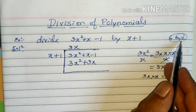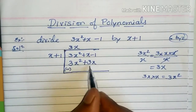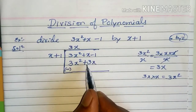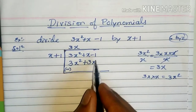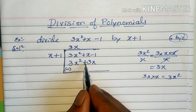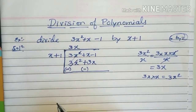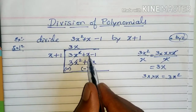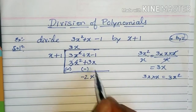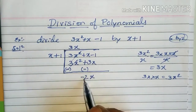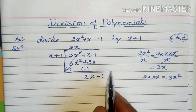Now we subtract. In division we always subtract, so change the signs. The sign of the first term is plus, so we put minus. 3x² minus 3x² cancels to 0. Then x minus 3x equals -2x. Bring down the remaining term -1, giving -2x - 1 for the next step.